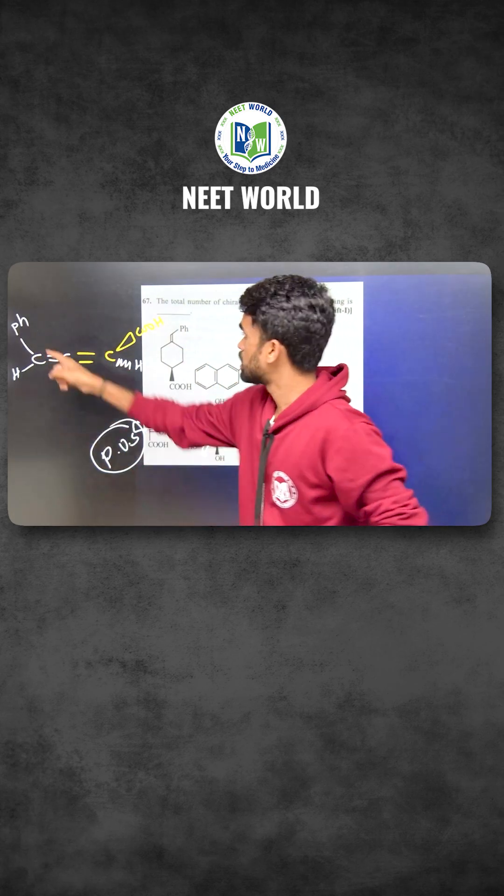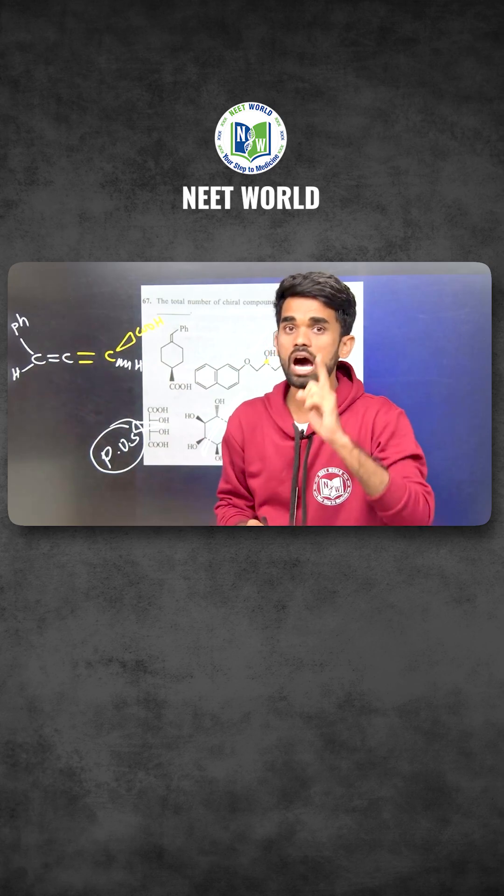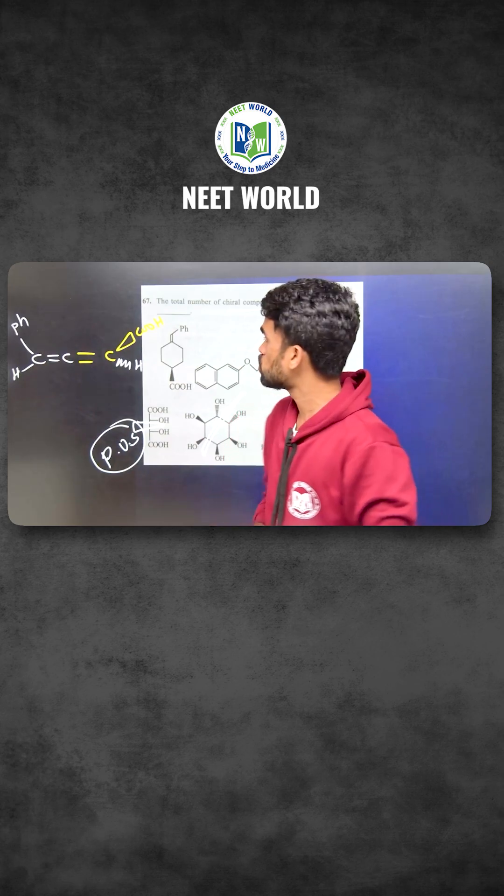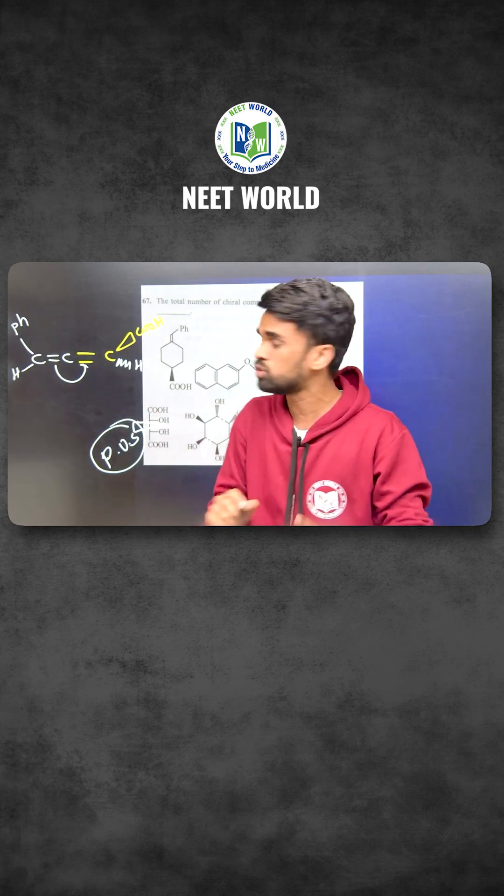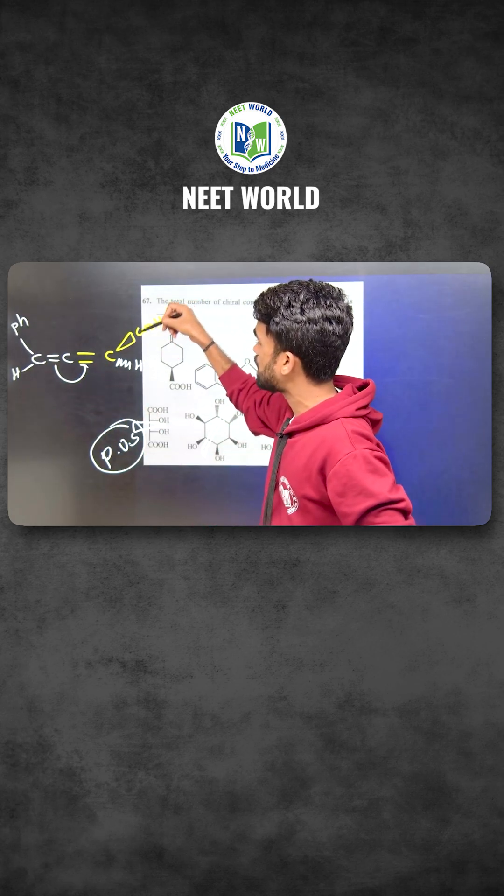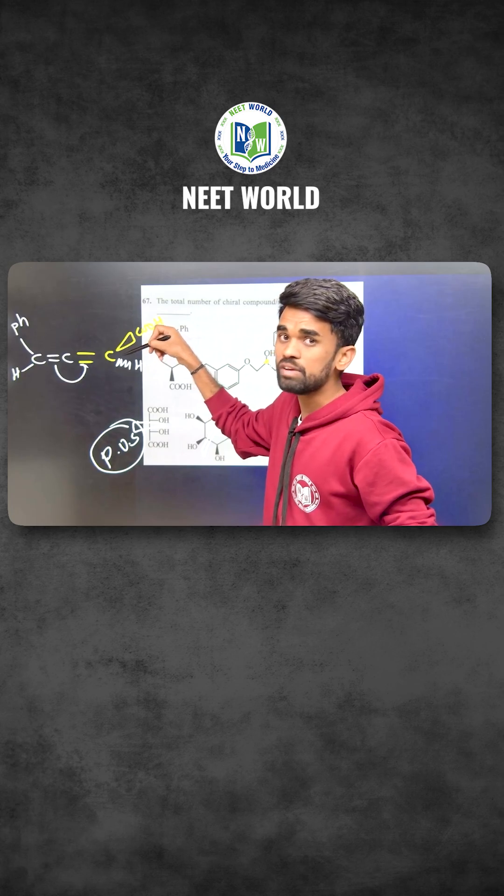So in allene molecules, both carbon atoms are perpendicular to each other. The groups are perpendicular to each other. Always remember in allene molecules, the terminal carbons which are having even number of double bonds are optically active.